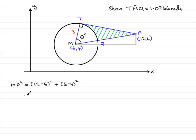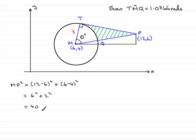So we have 12 take 6, all squared, which is 6 squared, and 6 take 4, all squared, which is 2 squared. If you work that out, you've got 36 plus 4, which is 40. So that means MP is therefore the square root of 40.